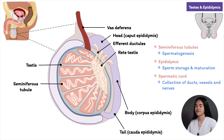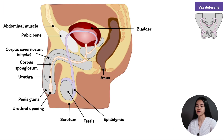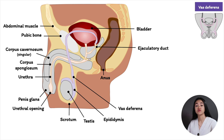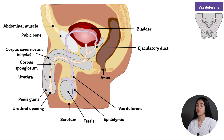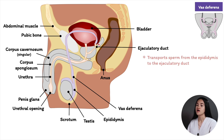The vas deferens is a thick muscular tube that transports sperm from the epididymis to the ejaculatory duct. The ejaculatory duct is the convergence of the vas deferens and the seminal vesicle. The vas deferens is part of the spermatic cord and travels through the inguinal canal, entering the abdomen and continuing behind the urinary bladder. The seminal vesicles are behind the bladder, and they join the two vasa deferentia — one from each testis — to form the two ejaculatory ducts.